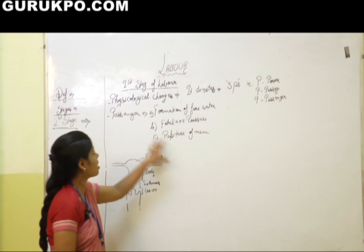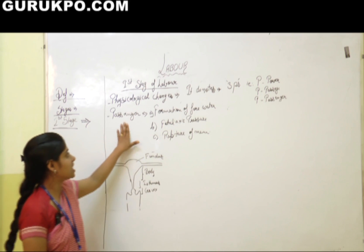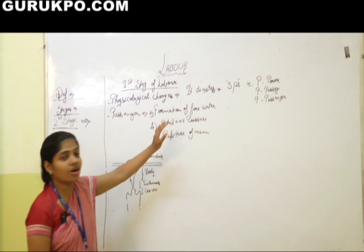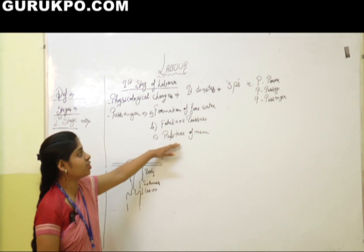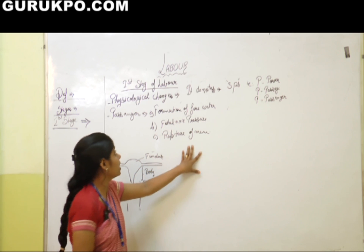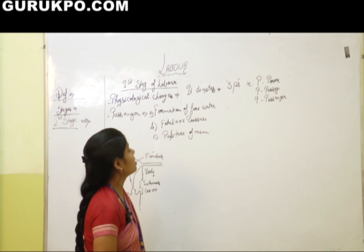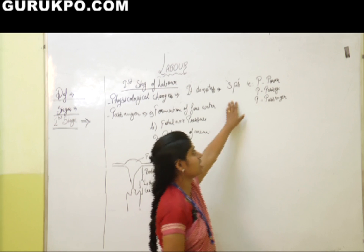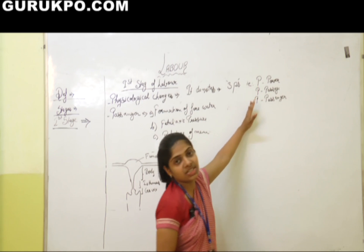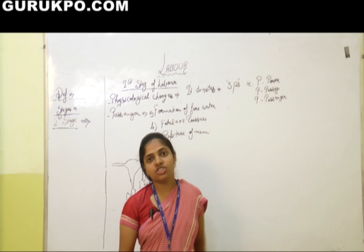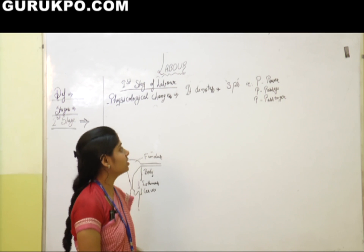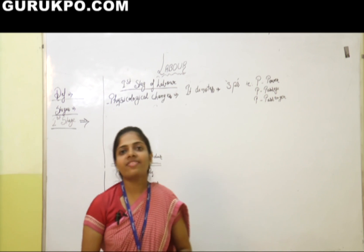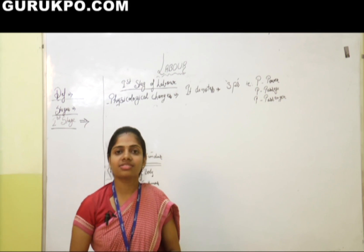So we have discussed about the passage — the formation of forewater, fetal axis pressure, and rupture of the membrane. In physiological changes, we have seen the three P's: power, passage, and passenger. We have discussed about the first stage of labor. I hope you all have understood. Thank you.